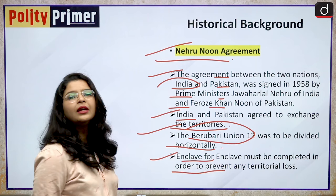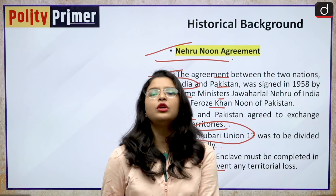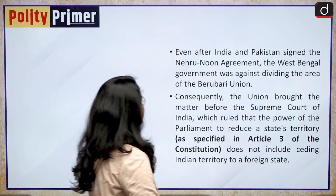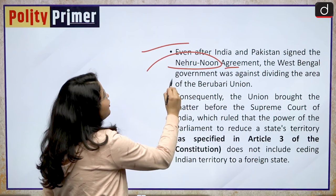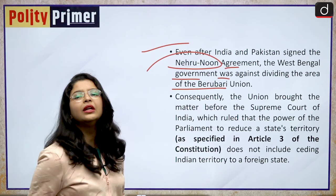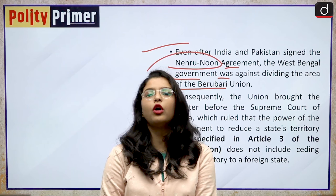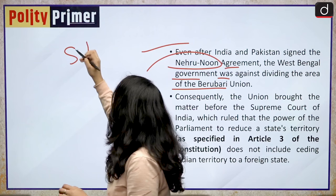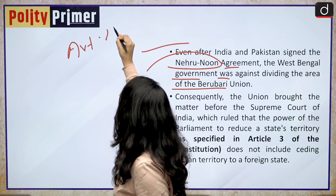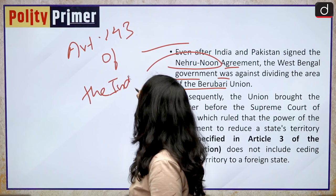The Berubari Union 12, a small border area, was to be divided horizontally. Enclave for enclave exchange was to be completed in order to prevent any territorial loss. Even after India and Pakistan signed the Nehru-Noon Agreement, the West Bengal government was against dividing the area of Berubari Union. Consequently, this case reached before the Honourable Supreme Court of India by a presidential reference under Article 143 of our Indian Constitution.